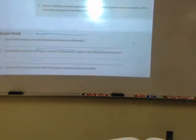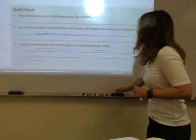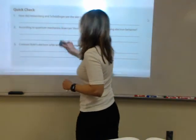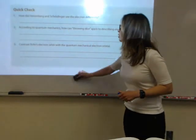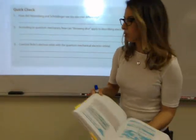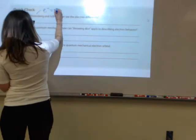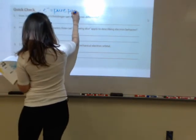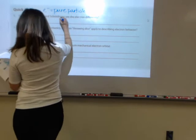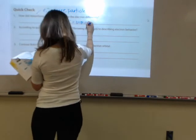Let's go on to the quick check here. Number one, how did Heisenberg and Schrodinger see the electron differently? So Heisenberg saw the electron as a pure particle where Schrodinger saw the electron as a wave.